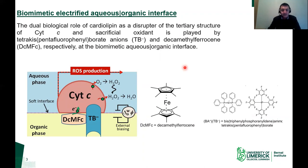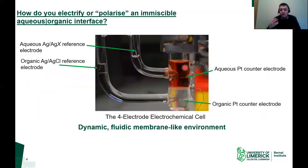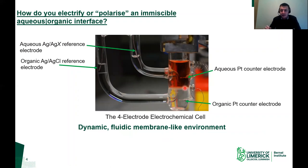Our interface is electrified, and this is important because you need to electrify the interface in order for this electron transfer process to take place thermodynamically and kinetically. We use a four-electrode electrochemical cell, which represents a way of doing electrochemistry in a dynamic, fluidic, membrane-like environment at a liquid-liquid interface. Its fluidic nature is biomimetic — much more so than a solid electrode modified with polymers or self-assembled monolayers.